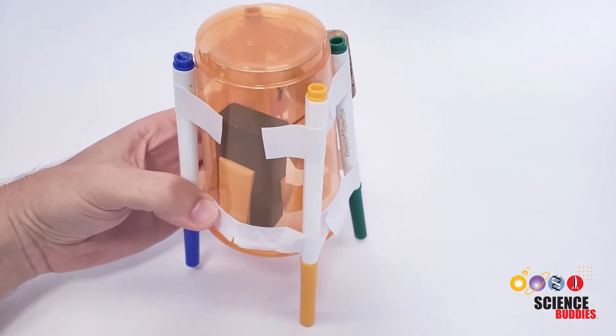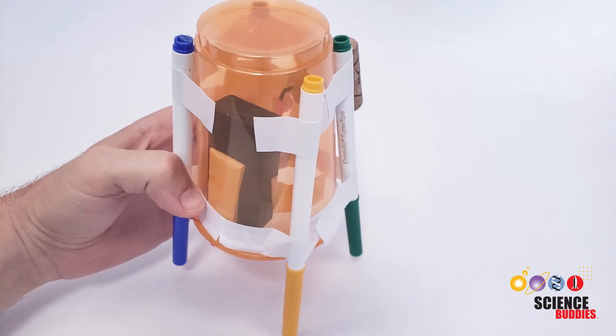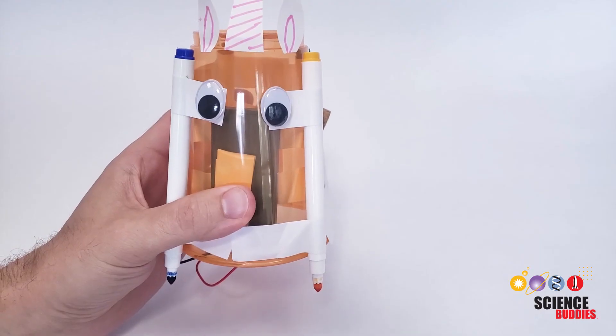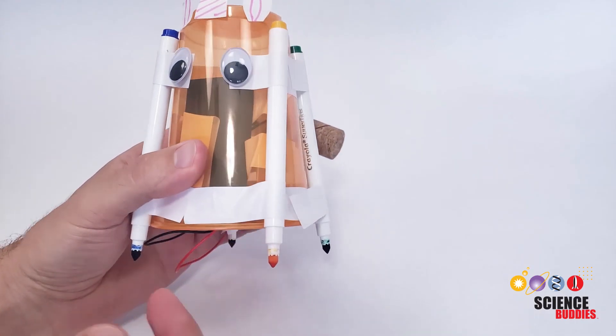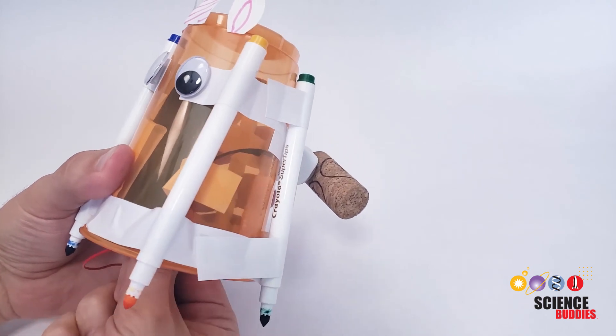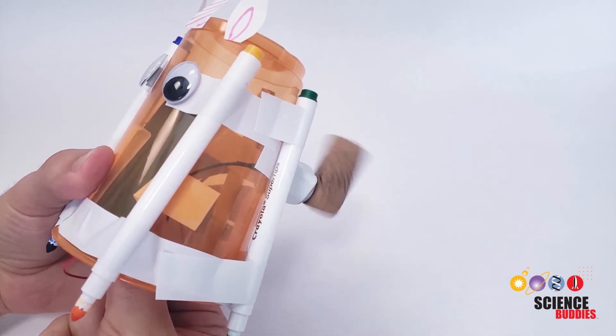Once you have the markers attached, you're ready to add decorations like googly eyes and a unicorn horn. Once you've added your decorations, remove the caps from the markers, turn your robot on, put it down on some paper, and watch it go.